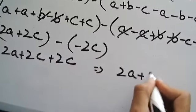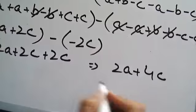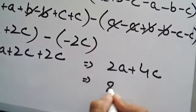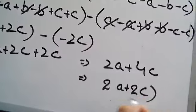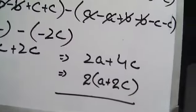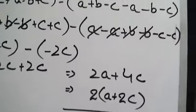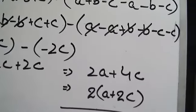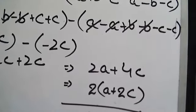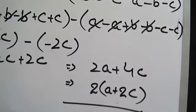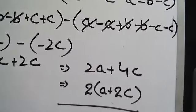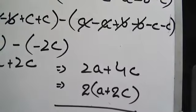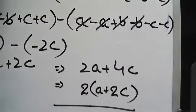We have 2a plus 4c, then taking 2 as common: 2 times (a plus 2c). Question 5 with all 10 parts is complete. Some remaining parts go in the copy. Now we will see Question 6.